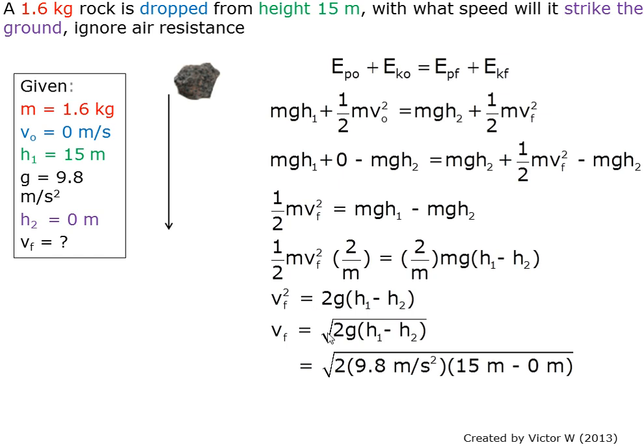Taking the square root of each side, we have final velocity equals the square root of 2g times (h₁ minus h₂).